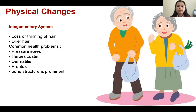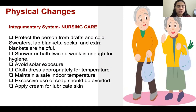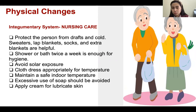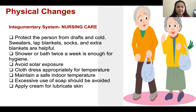Let's take a look at our nursing care. For changes in the integumentary system, we should protect the person from drafts and cold because they get cold easily. We should provide sweaters, blankets, and socks. Showers or baths twice a week is enough — don't force them to bathe every day because they are always feeling cold. We should understand them.